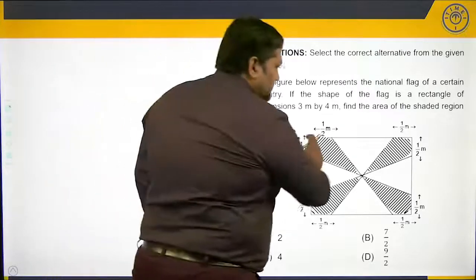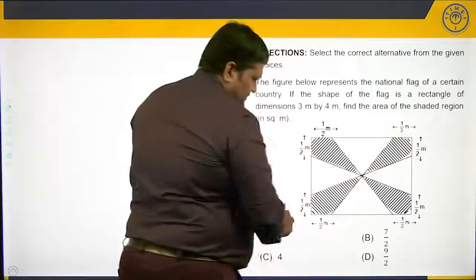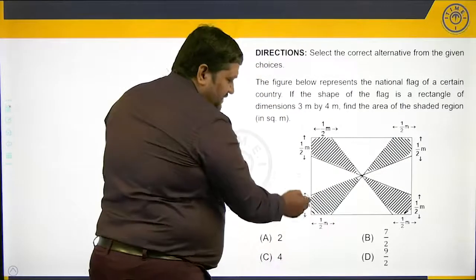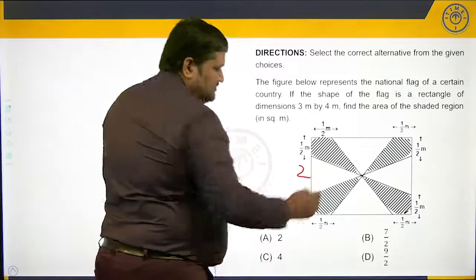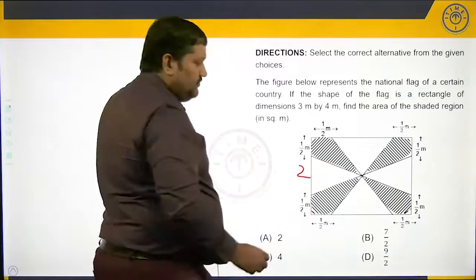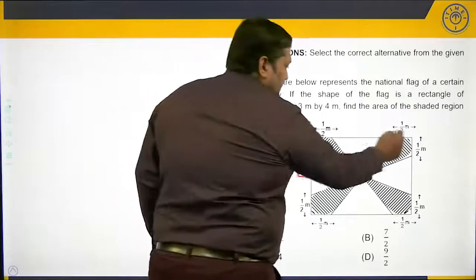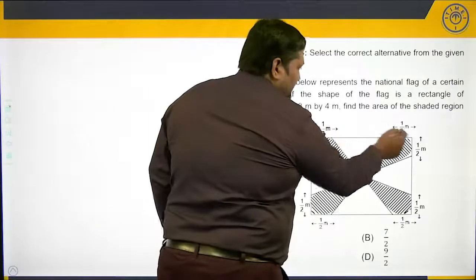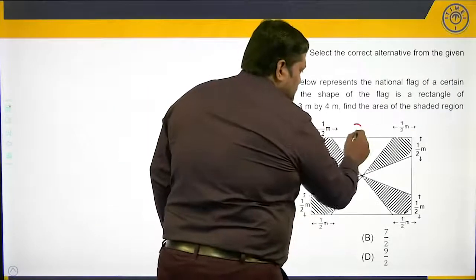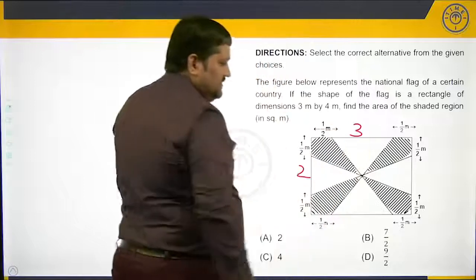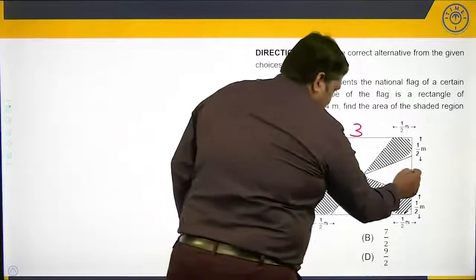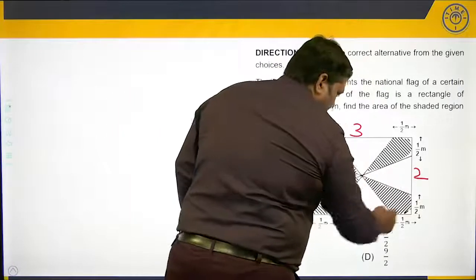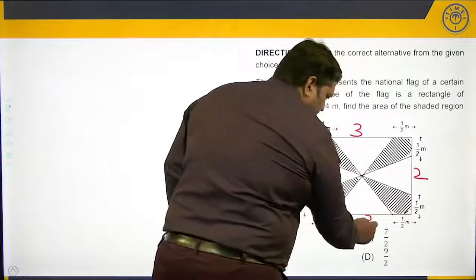So let us say this side is 3 and this side is 4. Half plus half is 1, so this should be 2. Similarly, this is also 2 and this is also 3.